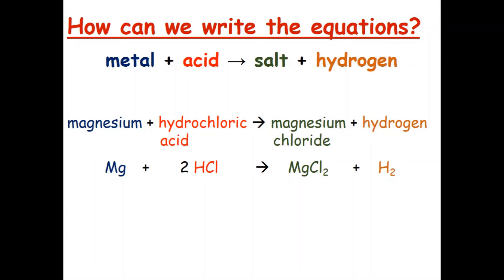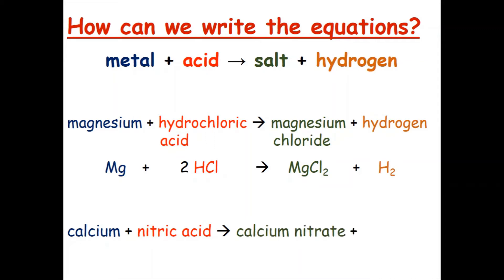Now we are going to look at a second example. This time we have calcium reacting with nitric acid. So the metal is calcium and the acid is nitric acid, and they react to form a salt called calcium nitrate and hydrogen.